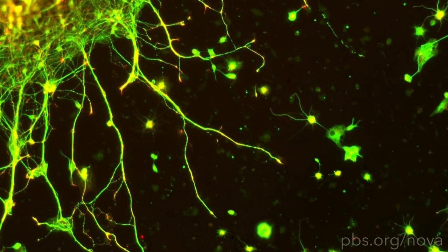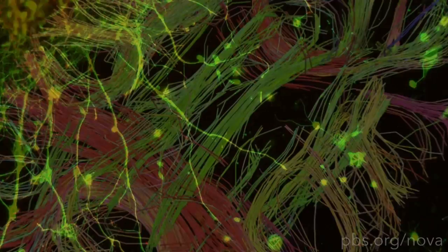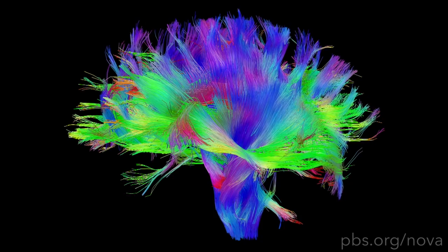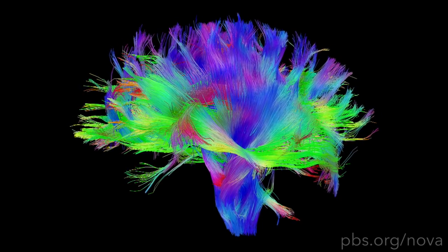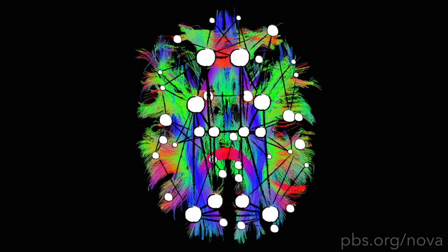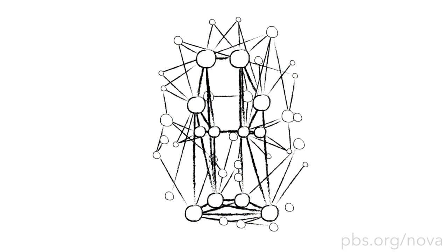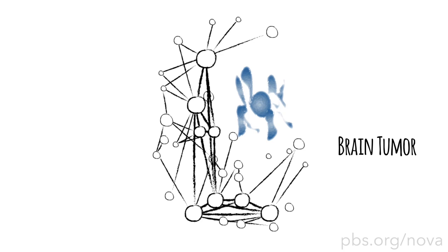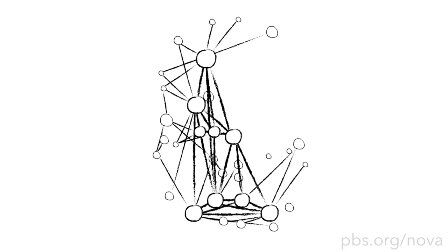Take your brain, for example. Its 10 billion neurons are wired in a network that scientists call the connectome. The brain needs different regions to be able to communicate effectively, so it makes sense for the connectome to have a small world pattern. In fact, the brain seems to want to wire itself this way. Things like brain tumors can break up the formation, but when the brain tries to recover, it goes back to a small world shape, rewiring and regenerating its network.